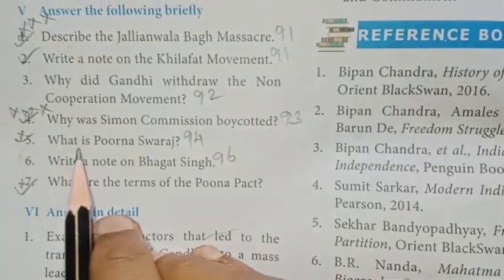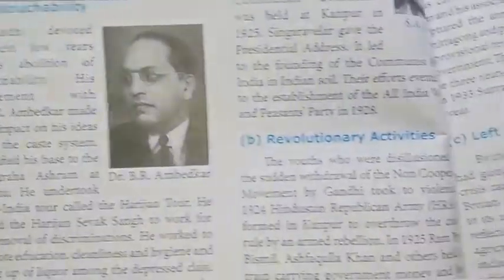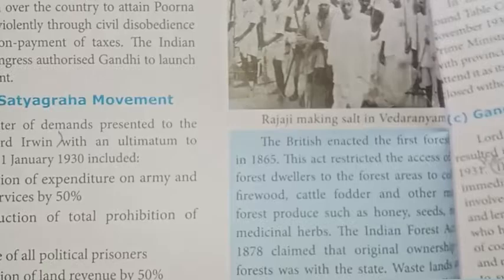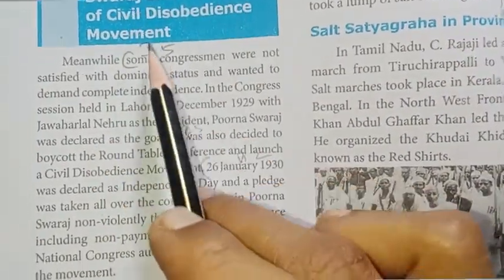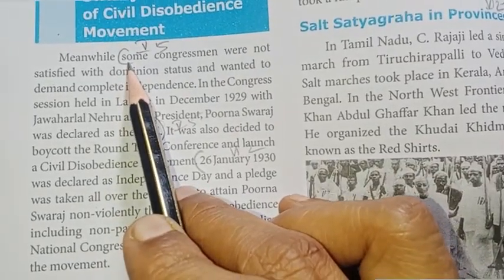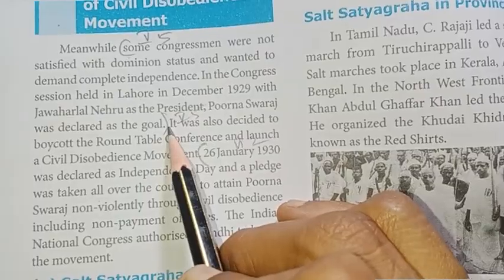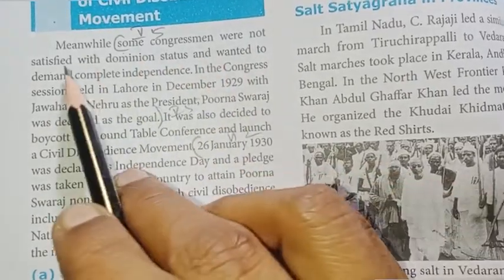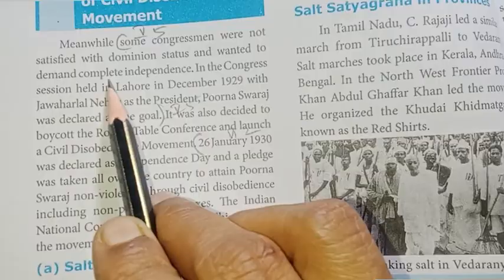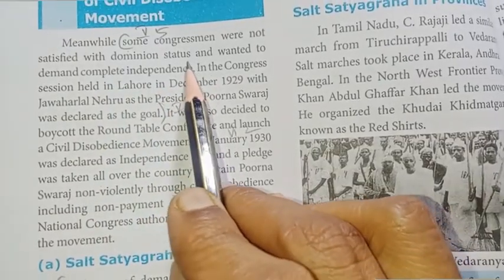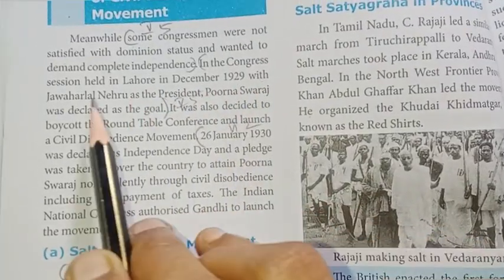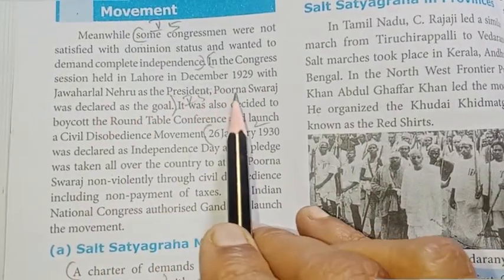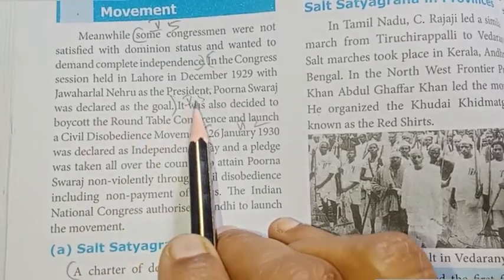Fifth: What is Poorna Swaraj? Page 94. Some congressmen were not satisfied with dominion status and wanted to demand complete independence. Two points: In the congress session held in Lahore in December 1929, with Jawaharlal Nehru as the president, Poorna Swaraj was declared as the goal.